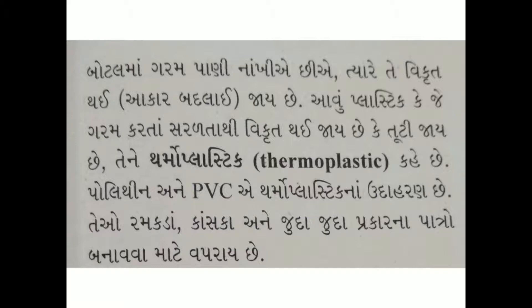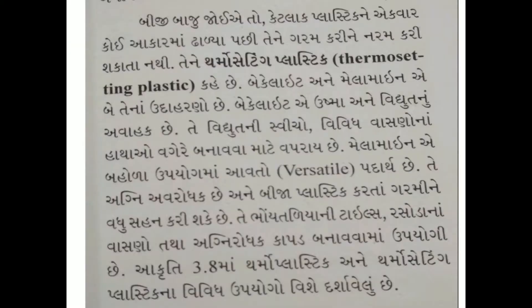રમકડા, કાસ્કા અને જુદા જુદા પ્રકારના પાત્રો બનાવવા માટે થર્મો પ્લાસ્ટિક વપરાય છે. થર્મો પ્લાસ્ટિકનાં ઉદાહરણ - પોલીથિન અને PVC - જેમાંથી રમકડા, કાસ્કા અને જુદા જુદા પાત્રો બનાવી શકાય.